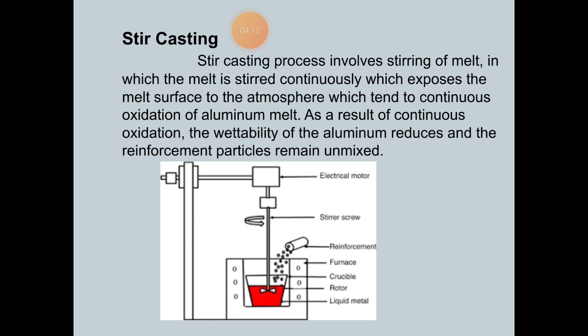Looking at the figure of the stir casting process, it contains liquid metal, a rotor, a crucible, furnace, reinforcement, a stirrer screw, and an electrical motor which is fitted to this equipment.